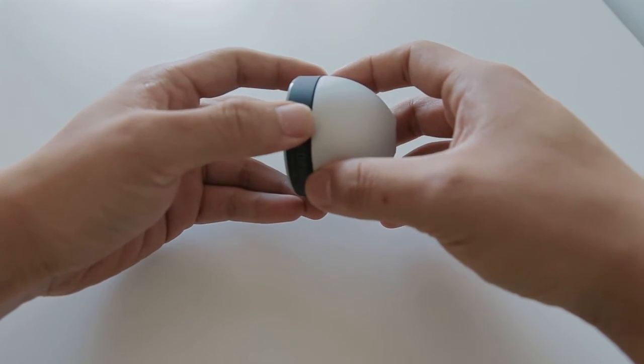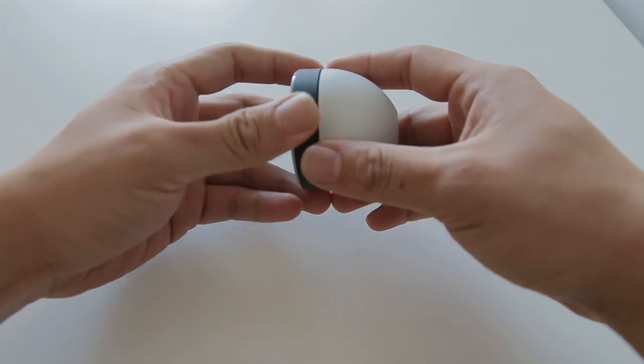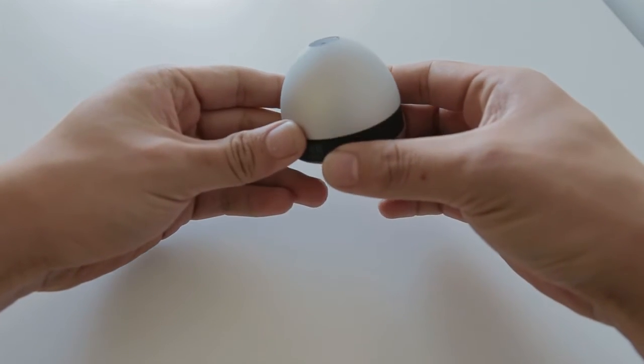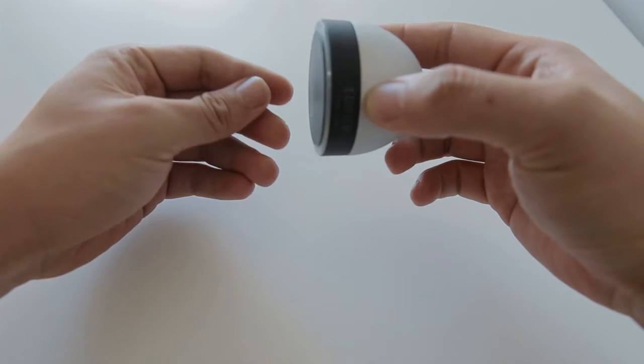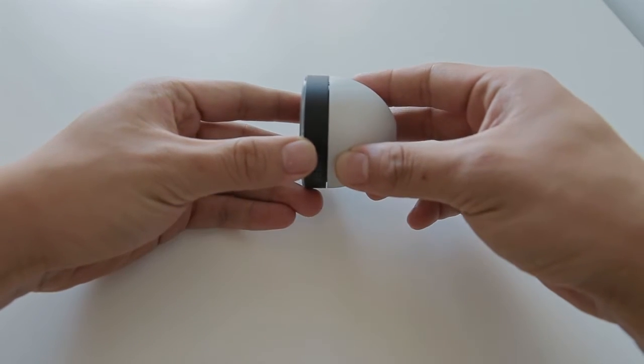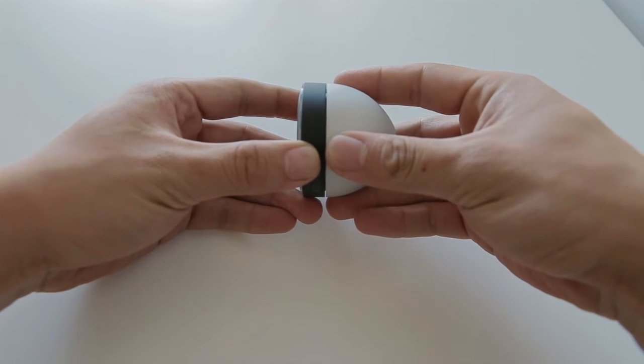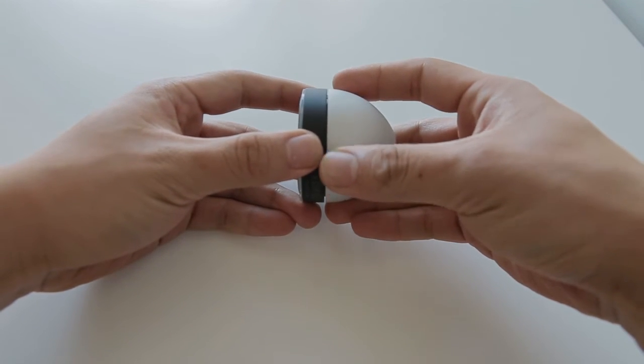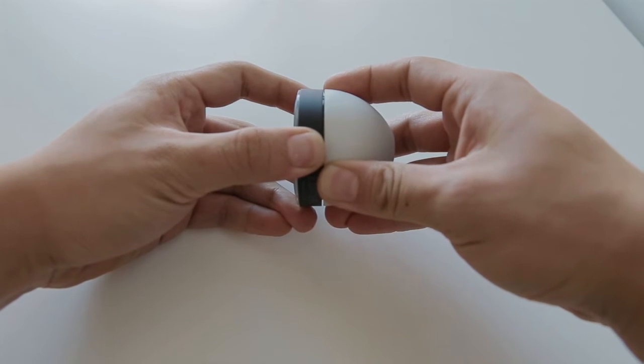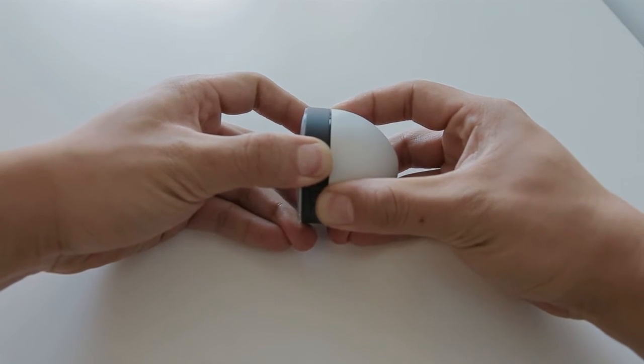So first step: the remote control actually comes in two parts - the little base part and the cap. With not much force, you can just pull this part off like that.